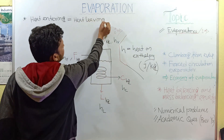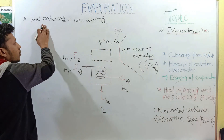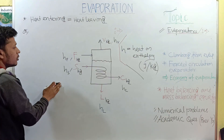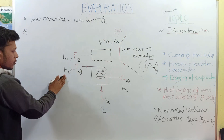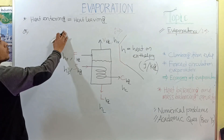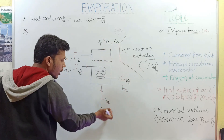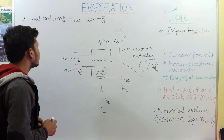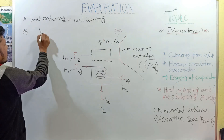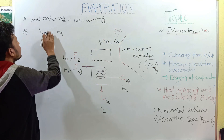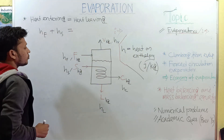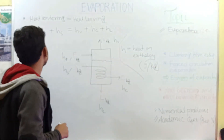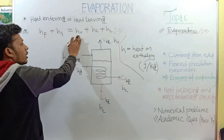In the balancing equation, we write that heat entering equals heat leaving. Heat in feed plus heat in steam equals heat in vapor plus heat in condensate plus heat in product. Symbolically: hf + hs = hv + hc + hl.